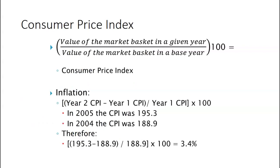Here's how you calculate this — we've talked about this in previous lectures. The value of the market basket in a given year divided by the value of the market basket in the base year times 100 equals the price index, whichever version you're talking about. For the inflation rate: Year 2 CPI minus Year 1 CPI, divided by Year 1 CPI, times 100. Plugging in the numbers gives 3.4% for 2005 relative to 2004. You're not dividing by 100 unless you're using the base year as your reference point.